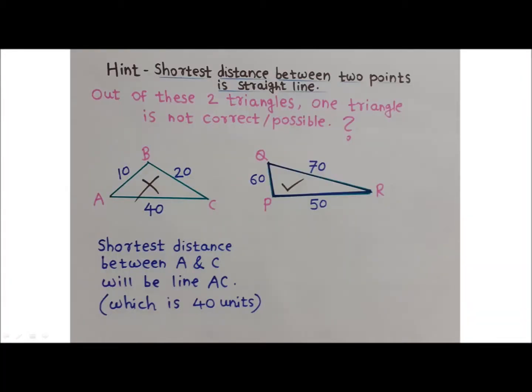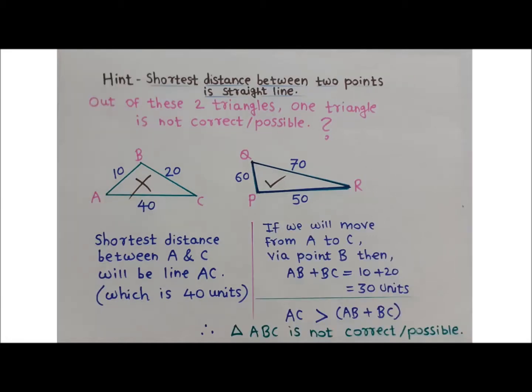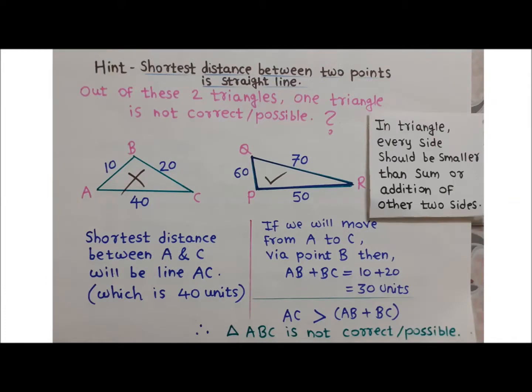The shortest distance between point A and C is line AC of length 40 units. If we move from A to C via point B, the distance is AB + BC = 10 + 20 = 30 units, which is smaller than the direct distance of 40 units. That is not possible — in a triangle, every side must be smaller than the sum of the other two sides.